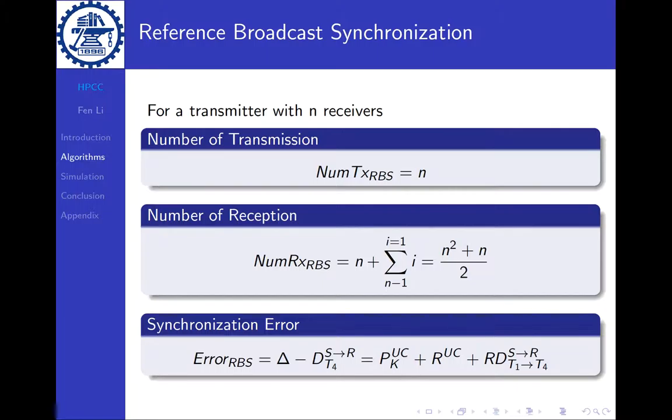The RBS approach has the advantage of reducing the critical path to improve the synchronization accuracy. But as you can see from the equation, it suffers from performance degradation in a dense network, which means N will increase significantly, so the number of receptions will increase as N increases.